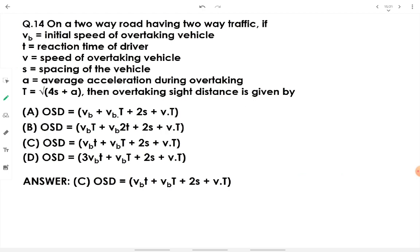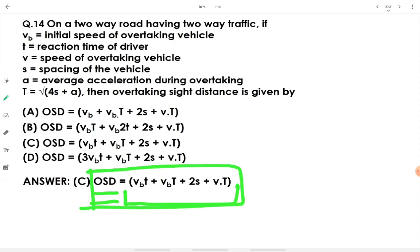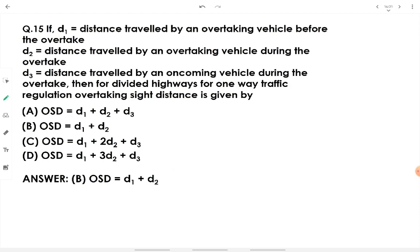On a two-way road with two-way traffic, if Vb is initial speed of the overtaking vehicle, T is reaction time, S is spacing, A is average acceleration, and T = √(4S/A), then OSD = Vb·t + Vb·T + 2S + v·T. Here D1 is distance traveled by the overtaking vehicle before overtaking, D2 during the overtake, and D3 is distance traveled by the oncoming vehicle during the overtake. For divided highways with one-way traffic regulation, OSD = D1 + D2.